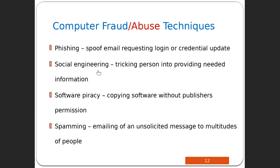The sixth technique is social engineering — tricking a person into providing needed information. Someone knows certain things about you and pretends to be someone you know. For example, if your boss is named Ayesha and you're collaborating on a project, someone could email you pretending to be Ayesha using a very similar email address with a small difference. They ask you to send the latest version of the project, and without noticing, you send it to the wrong person. That's social engineering — using personal knowledge to trick you.